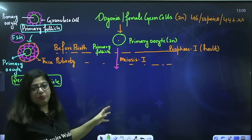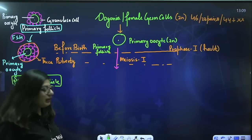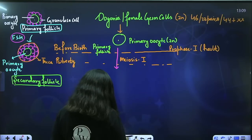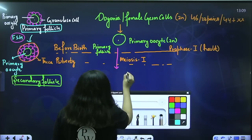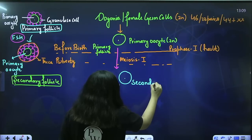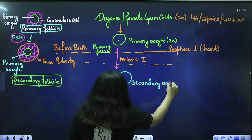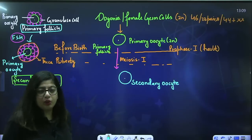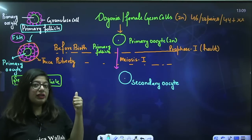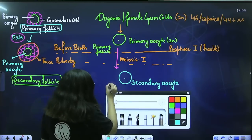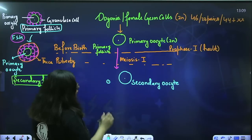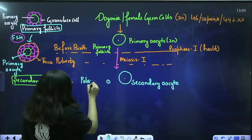Meiosis I will be completed and a cell will be formed — the secondary oocyte. But here the meiosis I will be unequal. In males the meiosis was equal, but in females it is unequal. As a result it will form two unequal-sized cells: the large cell is the secondary oocyte, and the small cell is called the polar body.